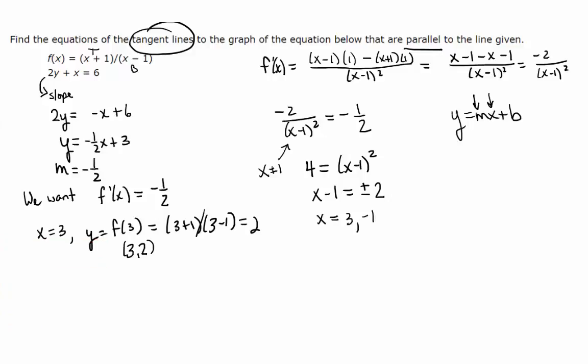Now, when x is negative 1, y is f of negative 1, which is equal to 0. Negative 1 plus 1 over negative 1 minus 1 is just going to be 0. It would be negative 1, 0.